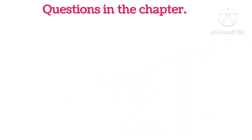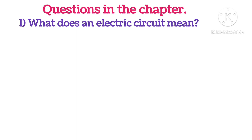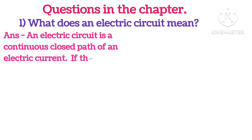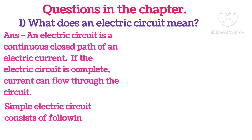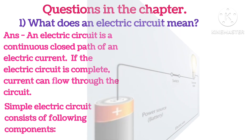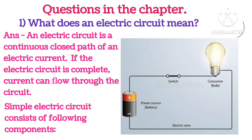Questions in the chapter. What does an electric circuit mean? An electric circuit is a continuous closed path of an electric current. If the circuit is complete, current can flow through it. A simple electric circuit consists of the following components: electric device, electric wire, switch, and power source, i.e., the battery.